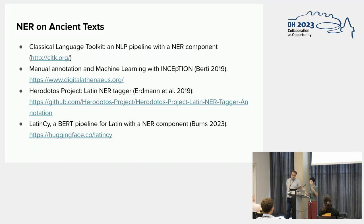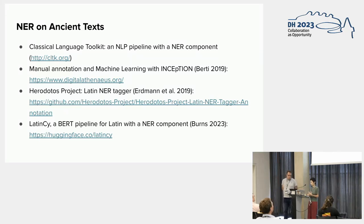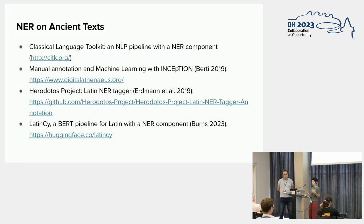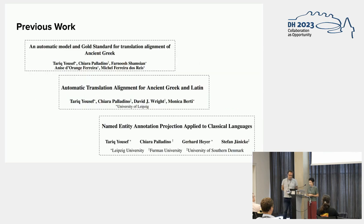The CLTK, the Classical Language Toolkit, was probably the first established pipeline for NLP in ancient languages, covering many of them including an entity recognition component. More recently, Monica Berti improved a manual annotation and machine learning combination with Inception, an annotation platform. Between 2017 and 2019 there was the Herodotus project focused on Latin, and more recently Patrick Burns presented LatinCy, a transformer-based pipeline with an NER component.